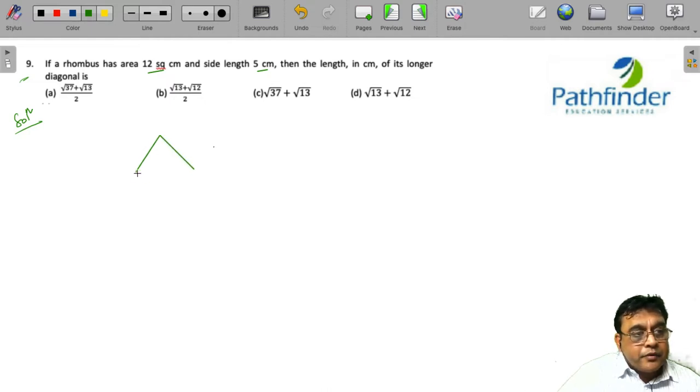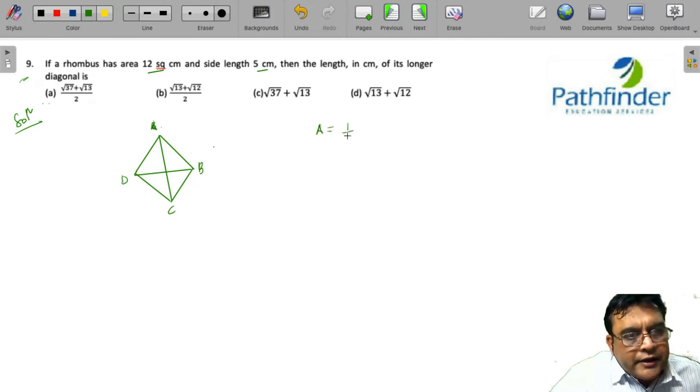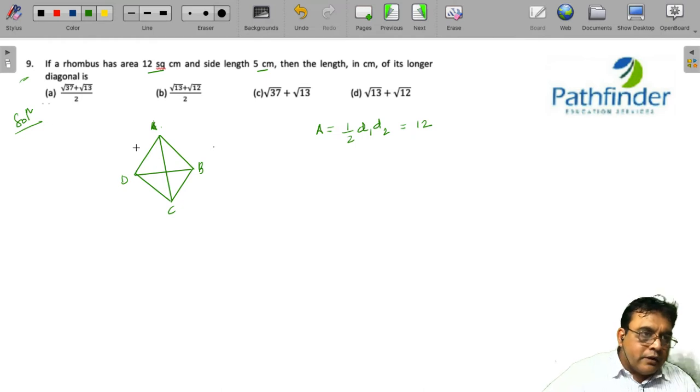So this is a rhombus which I have drawn and these are the two diagonals. Let us name the rhombus quickly, so rhombus is ABCD. Now we know that in a rhombus, the area is half of d1 into d2, which is given to you as 12, where d1 and d2 are the lengths of the diagonals. We also know that diagonals of a rhombus are perpendicular bisectors of each other. So AC and BD bisect at point, say, G.